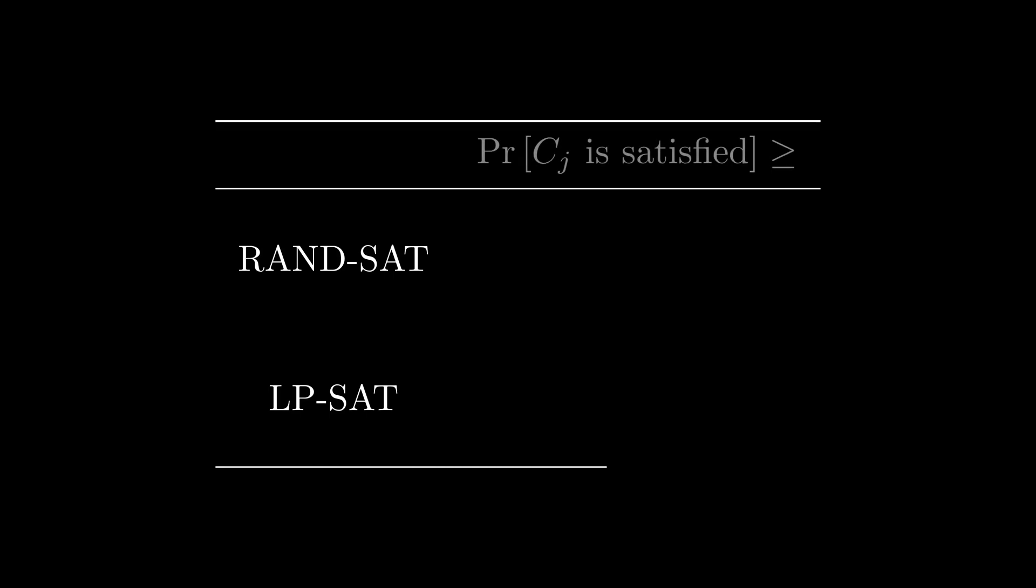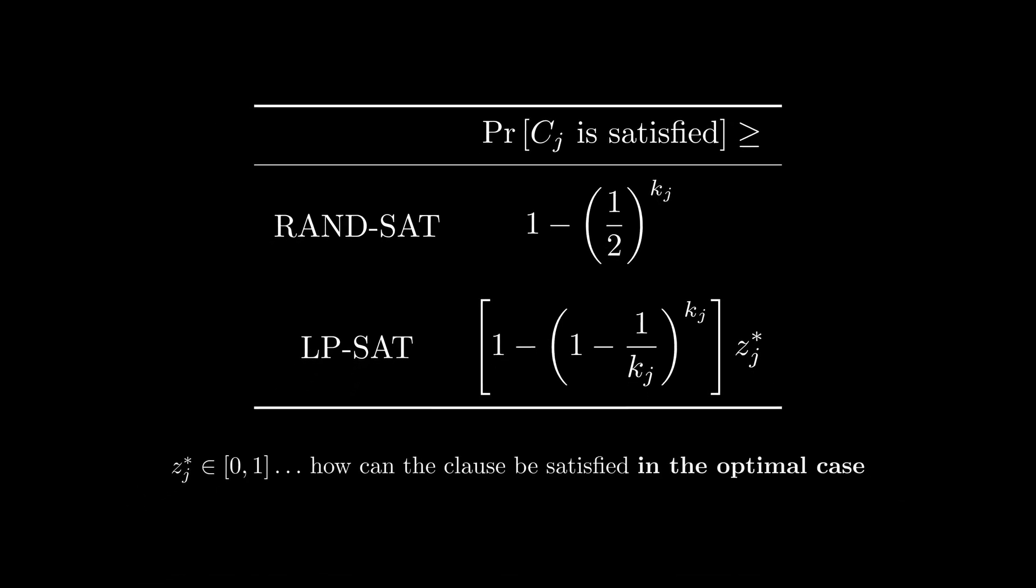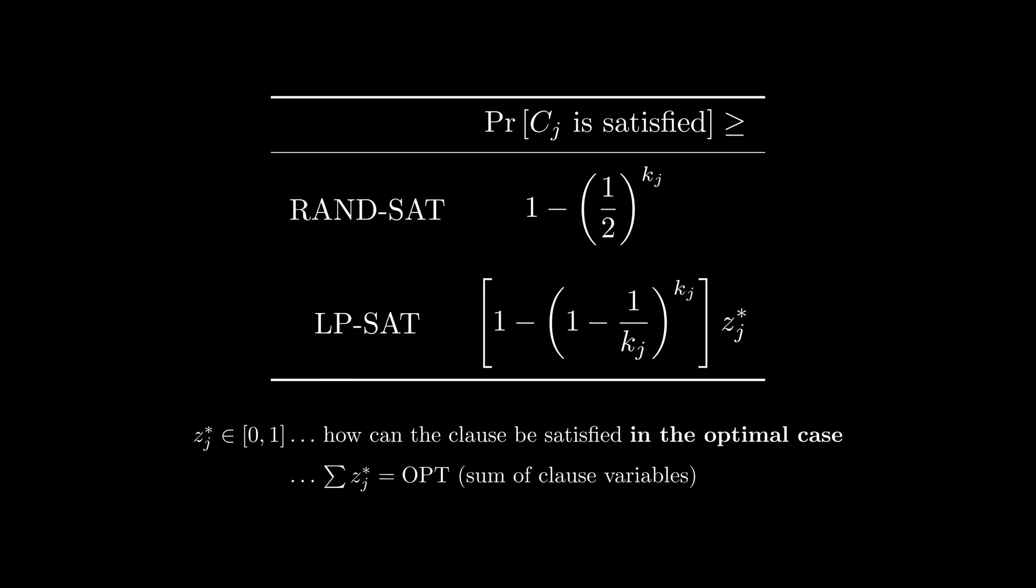Looking at both RAND-SAT and LP-SAT, the probability that a clause with Kj literals is satisfied is at least the following for each respective algorithm. As a reminder, z_j star is a number between 0 and 1, which tells us how well can the clause be satisfied in the optimal case, the sum of z_j's being the optimum. Since it is less than 1, we'll add it to RAND-SAT too, for easier calculations.